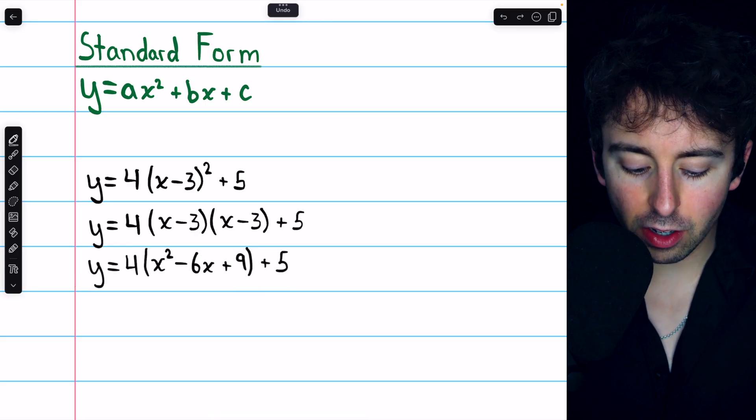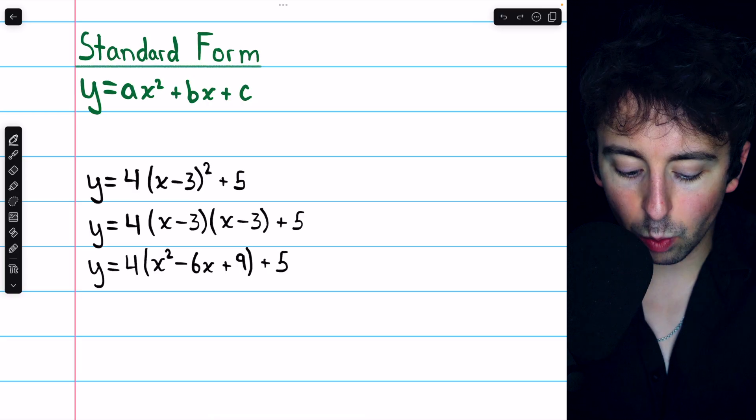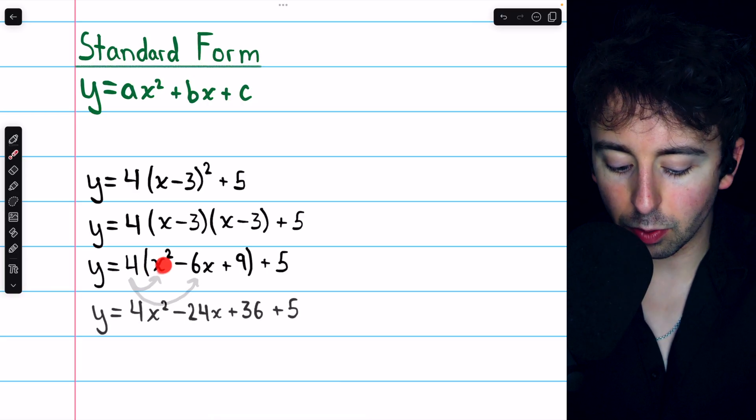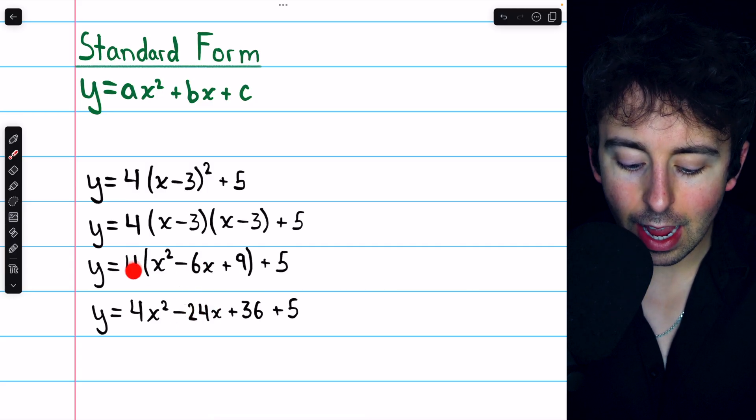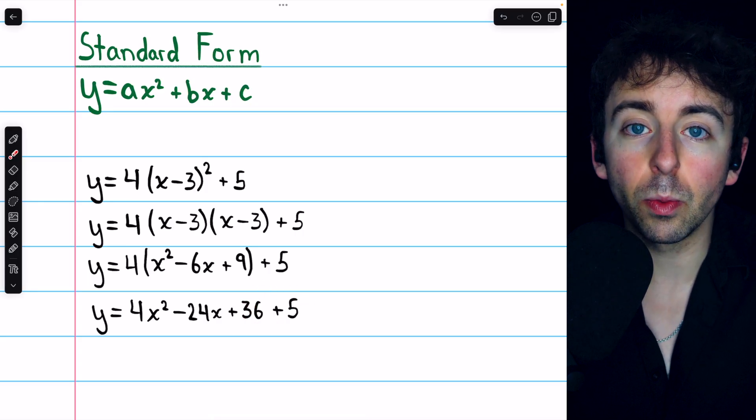So that gets us here, and don't forget, we still have that factor of 4. So now we'll distribute the 4 through the parentheses. There's 4 times x squared, 4 times negative 6x, and 4 times 9. Finally, 36 plus 5 is 41.